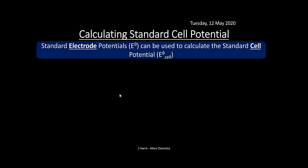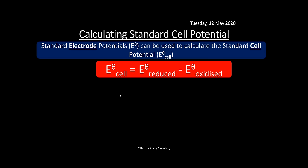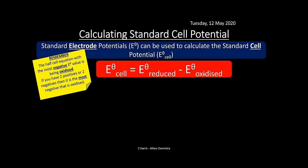Standard electrode potentials can be used to calculate the standard cell potential: E⁰cell = E⁰reduced − E⁰oxidized. Remember: NO PROBLEM identifies which is oxidized (most negative) and which is reduced. 'Redox' also helps you recall the order — Reduced minus Oxidized.